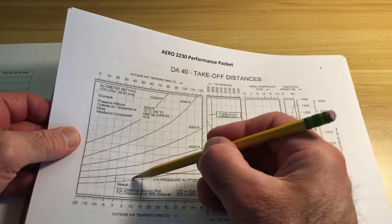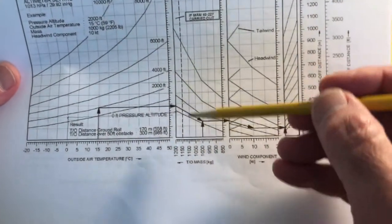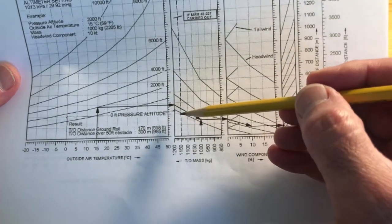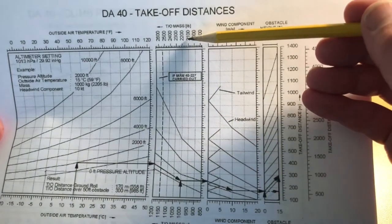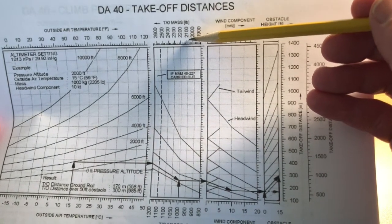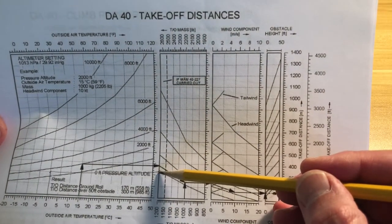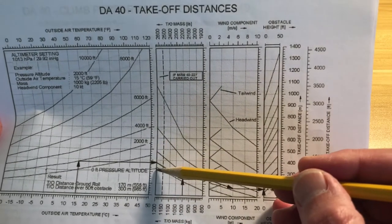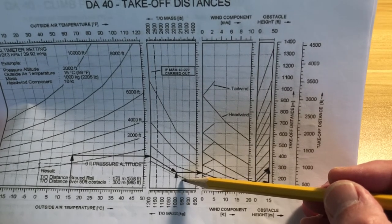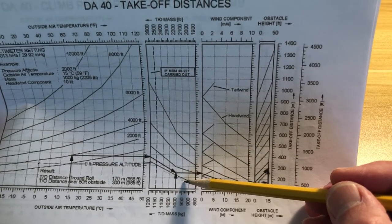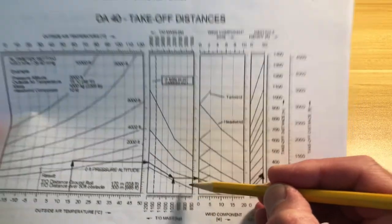It's a good idea to use a ruler so that you get that as accurate as possible. The next task is to find the weight of the aircraft in the next section — that's 2,100 pounds. From the point where we intersect the reference line, we follow these lines parallel down to the weight, and then draw a straight line from that point over to the next reference line.